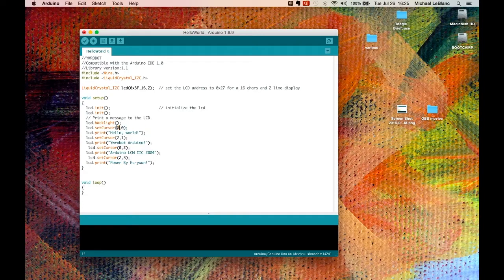The set cursor commands allow you to set the cursor, the starting point of where you're going to write on the LED at any point within the matrix of sixteen across and two down. So I'm going to set it to zero which is farthest left line zero and then the next line will be character zero line one.